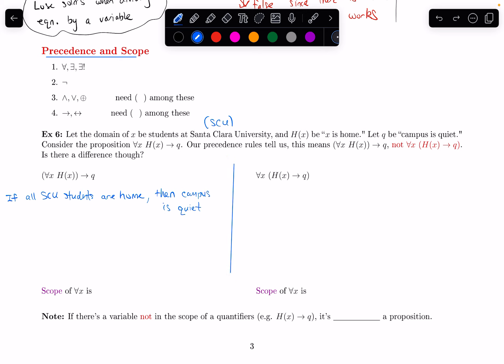For the second one, we have the for all in front of everything, and then we have the implication after that. So the for all part is saying for all students X, or I should say for all SCU students X. And then I have my if-then portion.